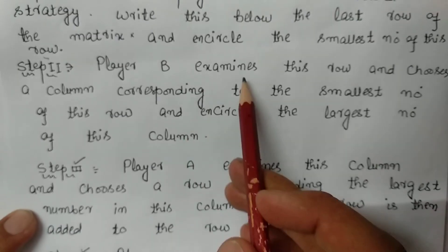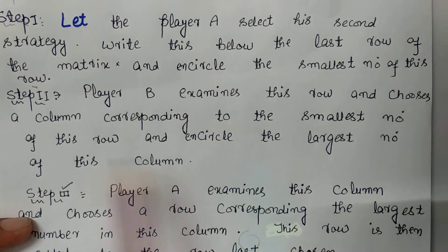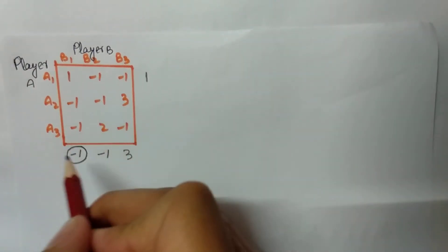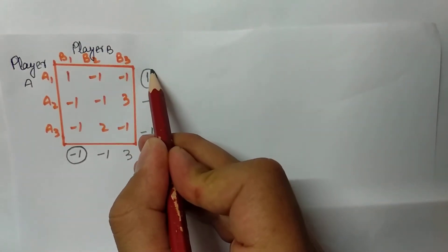Step 2: Player B examines this row and chooses the column corresponding to the smallest number of this row, then encircles the largest number of that column. Player B chooses the first column corresponding to the smallest number minus one, and writes it to the right side of the matrix. So I will write the first column values: minus one and minus one. Then we encircle the largest number, which is one.